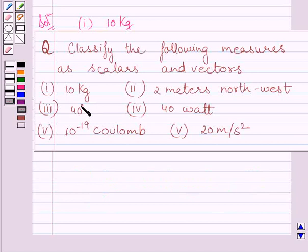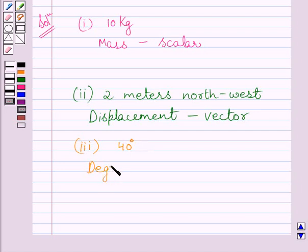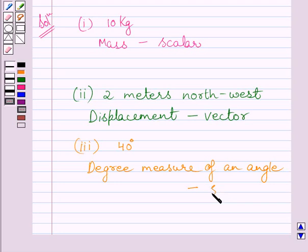The third measure given to us is 40 degrees. Clearly we can see this is a degree measure of some angle. The degree measure of an angle has magnitude but no direction, so it is a scalar quantity.